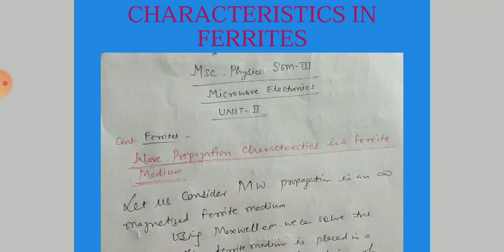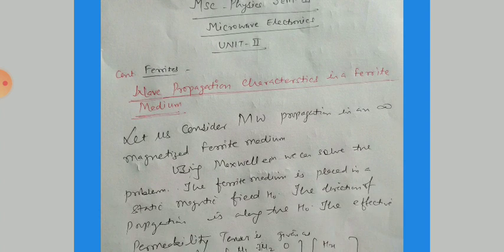What happens when a microwave propagates in the Ferrite medium? For this, let us consider the microwave propagation in an infinite magnetized Ferrite medium — meaning its length is infinite. Using Maxwell's equations, we can solve the problem. The Ferrite medium is placed in the static magnetic field H₀.